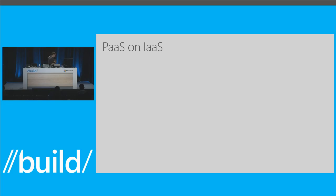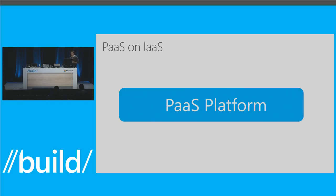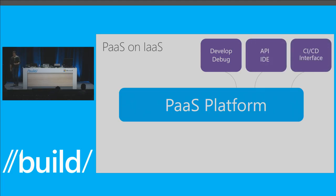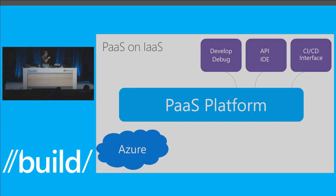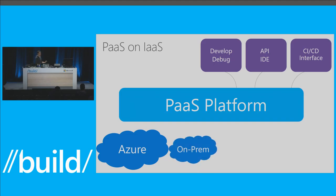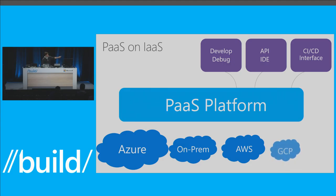PaaS on IaaS — the ability to deploy PaaS platforms on IaaS instances, similar to what I showed with Container Service. You can take advantage of the VMs and scale sets underneath and deploy the same solutions you would elsewhere. You get the same development and debugging experience, the same API, IDE experience, and CI/CD interface that works on all of them. You can deploy on Azure but also take these portable PaaS solutions and deploy on-prem, or even on AWS or GCP — giving you consistency of experience across all of them.